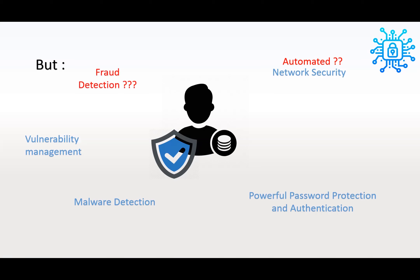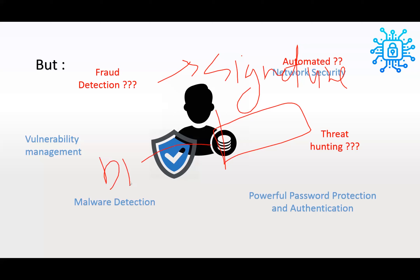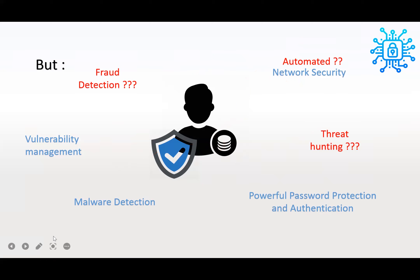And fraud detection. I will explain something: if somebody steals your signature and copies it from a bill and pastes it on another bill, then he can buy something — he can steal from you — and we cannot detect this. This is very difficult for a human being. And threat hunting — this is very important.